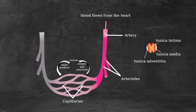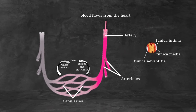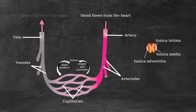Capillaries are the smallest and most numerous of the blood vessels, forming the connection between arteries and veins. The primary function of capillaries is the exchange of materials between the blood and tissue cells. After blood passes through the capillaries, it enters the smallest veins called venules. From the venules, it flows into progressively larger veins until it reaches the heart.